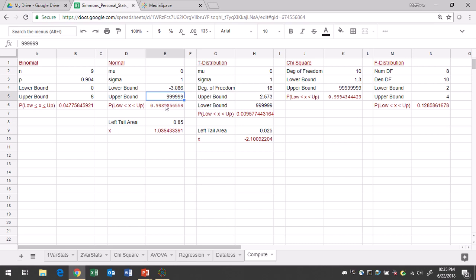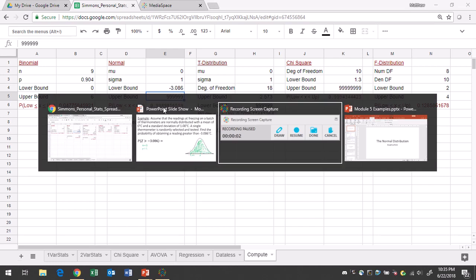Your probability will show up here in cell E6. It's 0.9989, which rounds to 0.999 if I round to four decimal places. So 0.999 is going to be our answer.